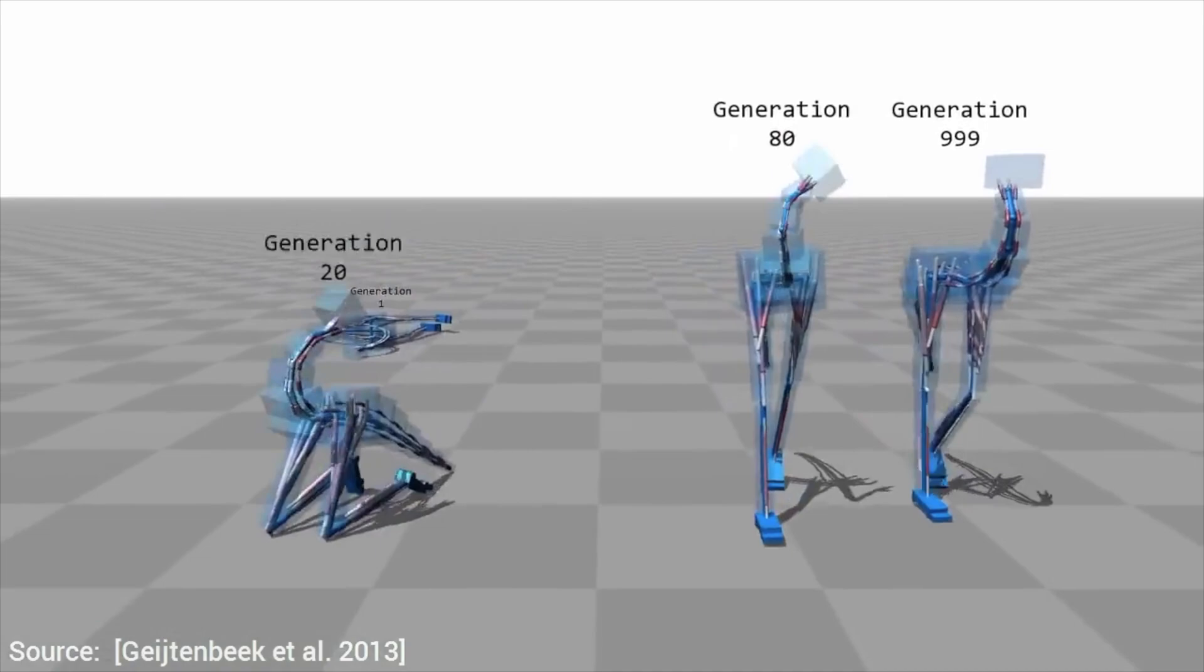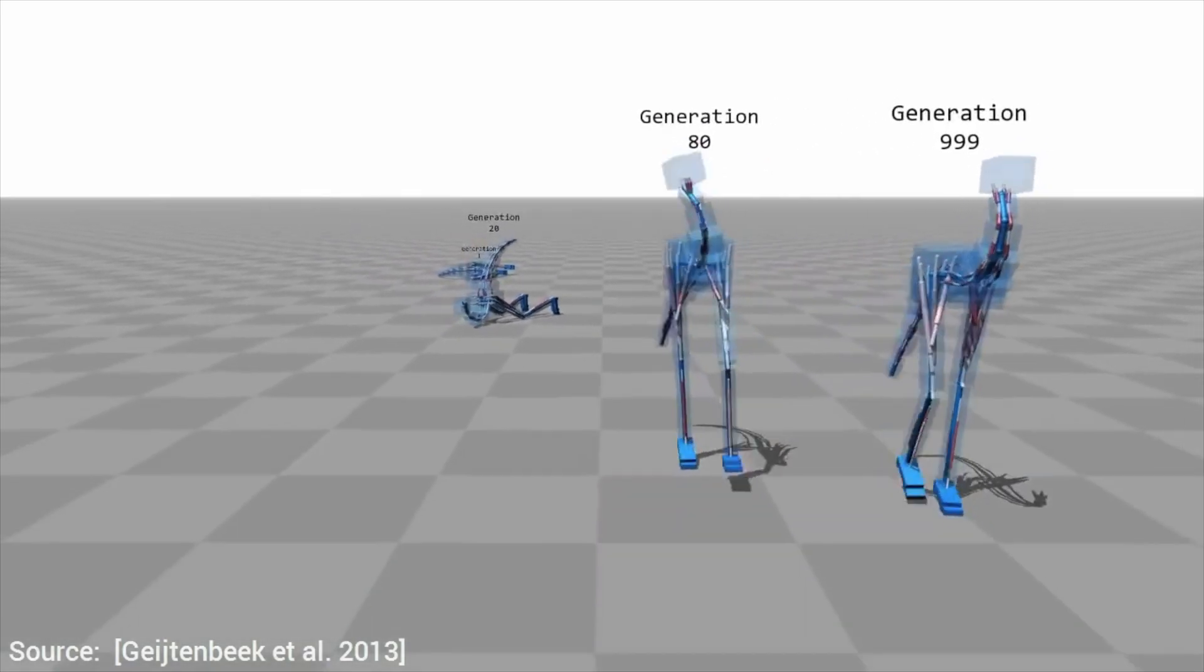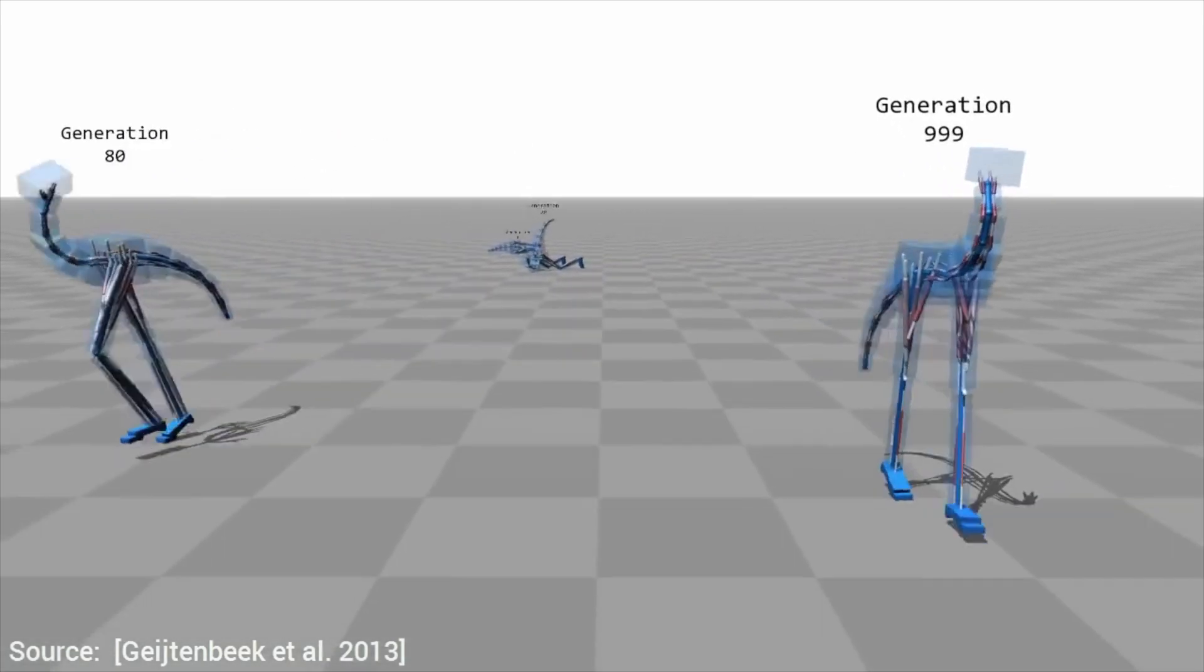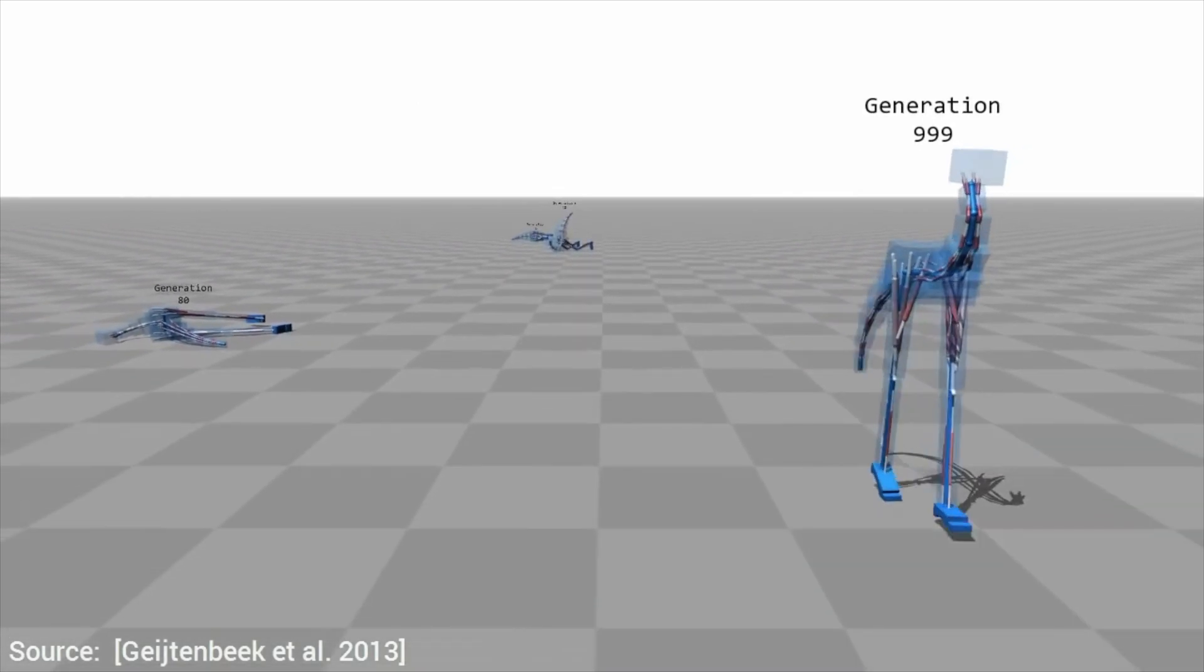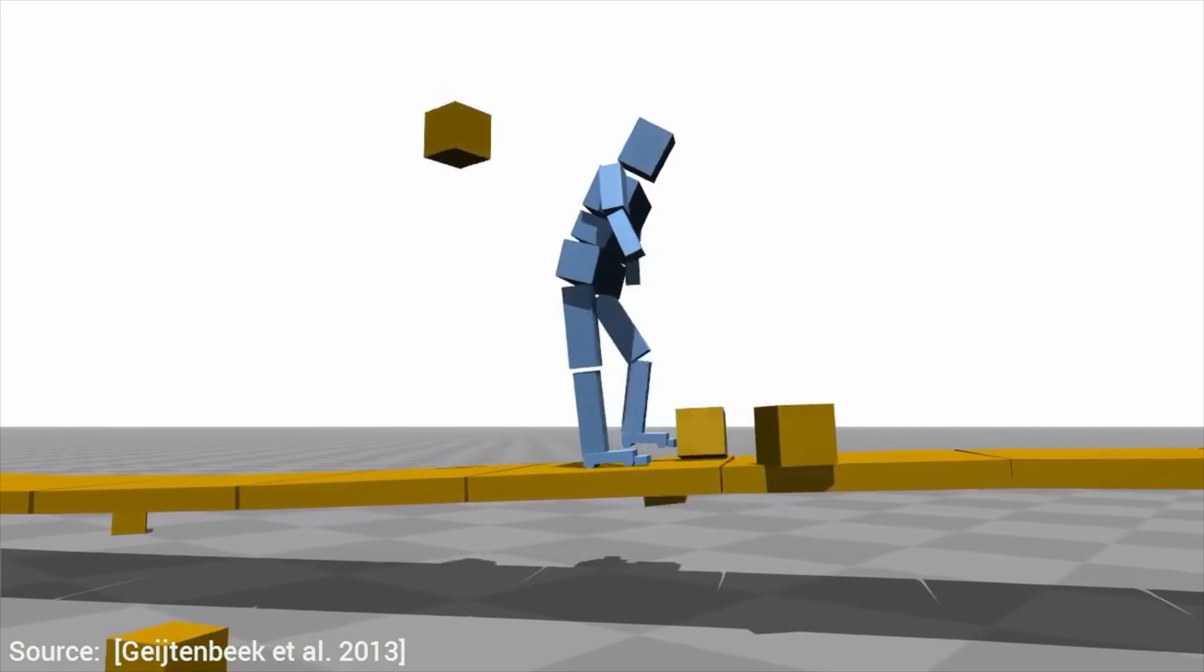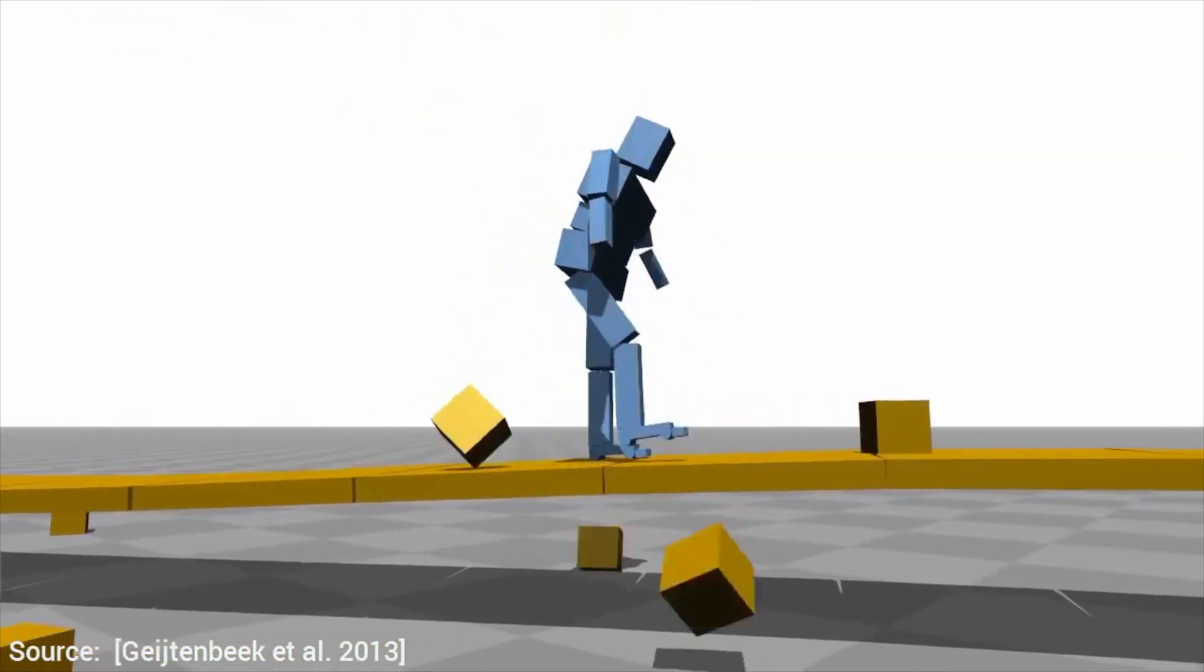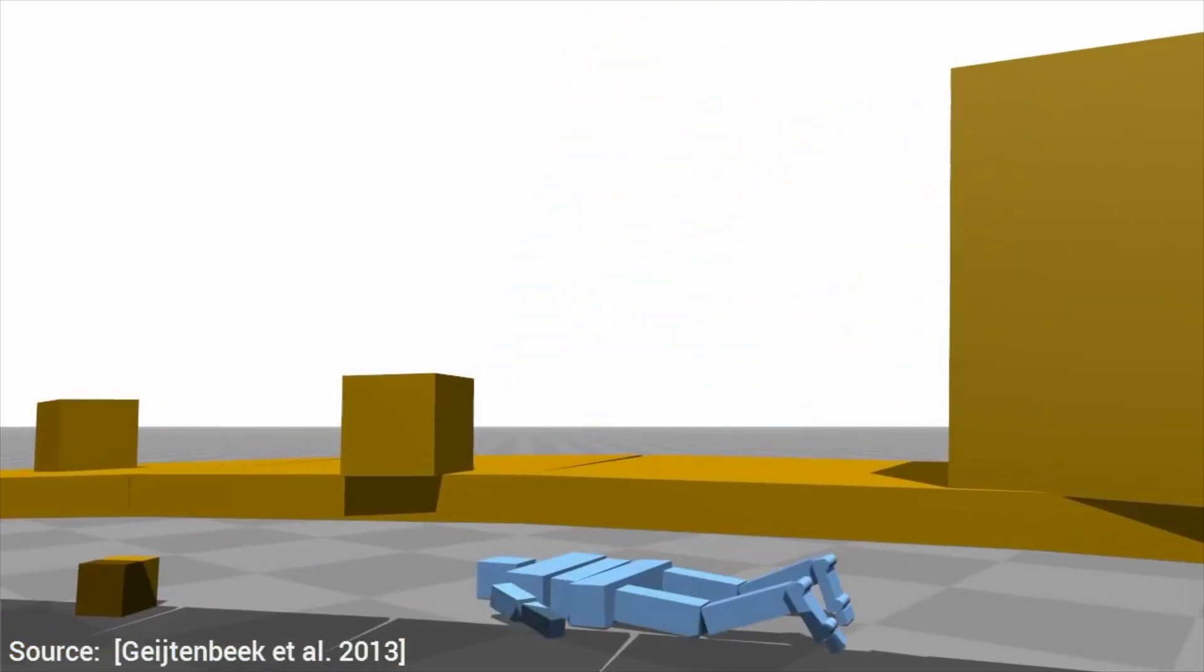These control algorithms are not only able to teach these creatures to walk, but they are quite robust against perturbations as well. Or, more simply put, we can engage in one of the favorite pastimes of a computer graphics researcher, which is, of course, throwing boxes at a character and seeing how well it can take it. This one has done really well. Well, kind of.